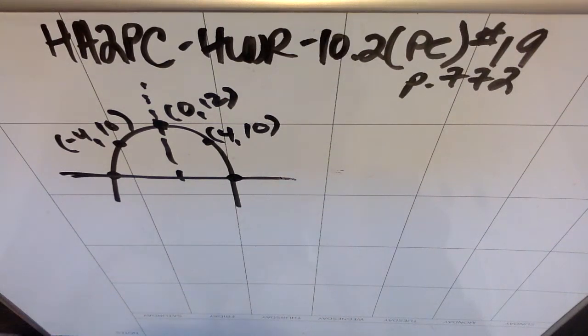This is Honors Algebra II Precalculus. We're doing homework review in section 10.2 of Precalc, number 19, on page 772. This is an architecture word problem, so I'm just going to read it to you rather than writing the entire paragraph.